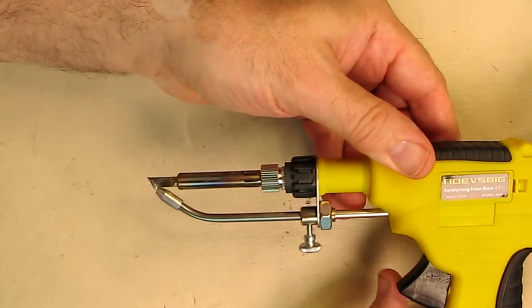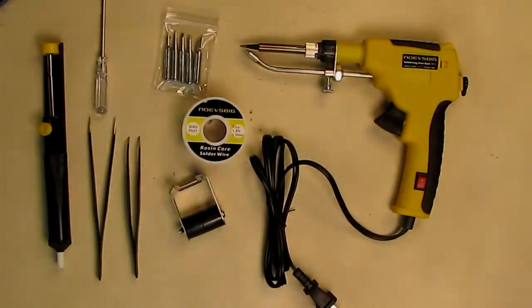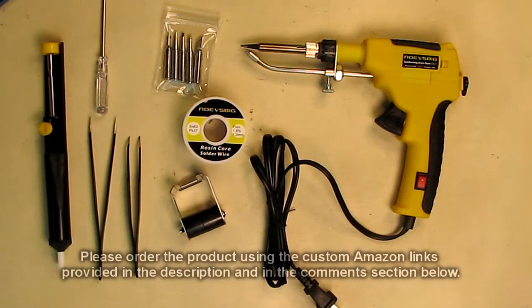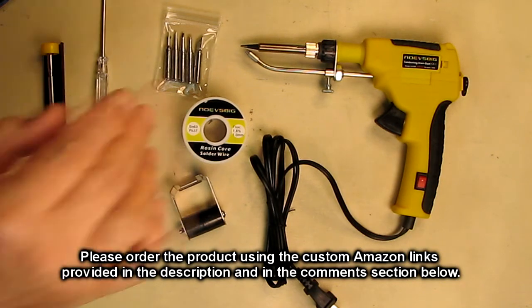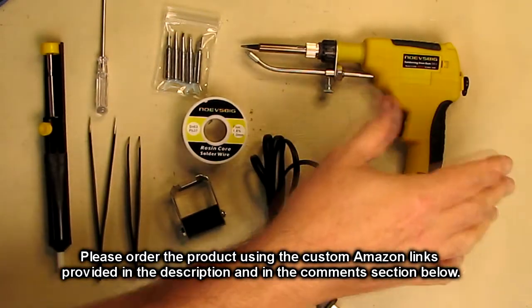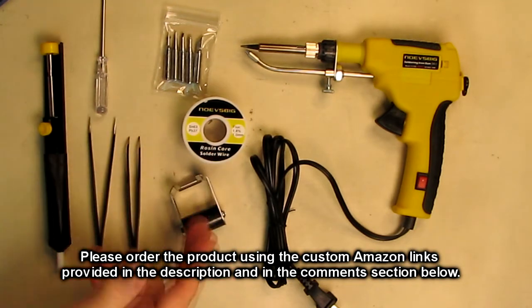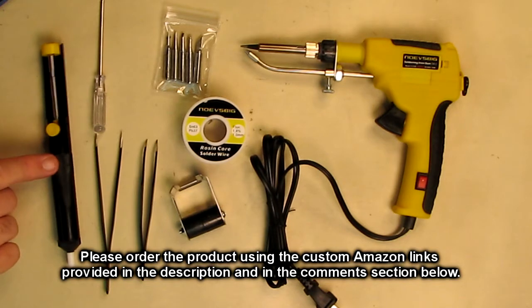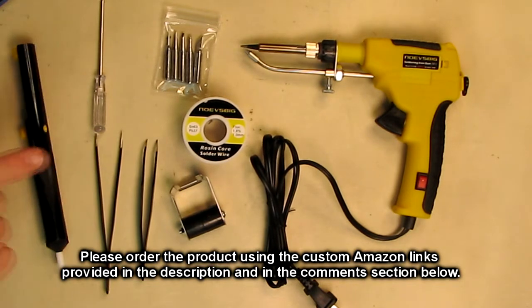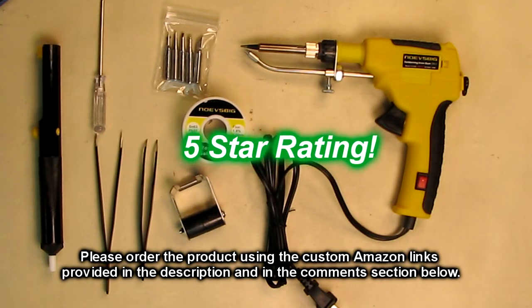So what do I think about the NoeVSPEG brand soldering iron gun kit, the 60-watt gun that has automatic feeding ability and the extra tips, the solder, solder holder, the tweezers, the Phillips screwdriver, and the solder desucking tool? Very nice quality. I think this is a great value. You're getting a lot here and it's going to be very nice quality. I'm going to give it a full five-star rating.